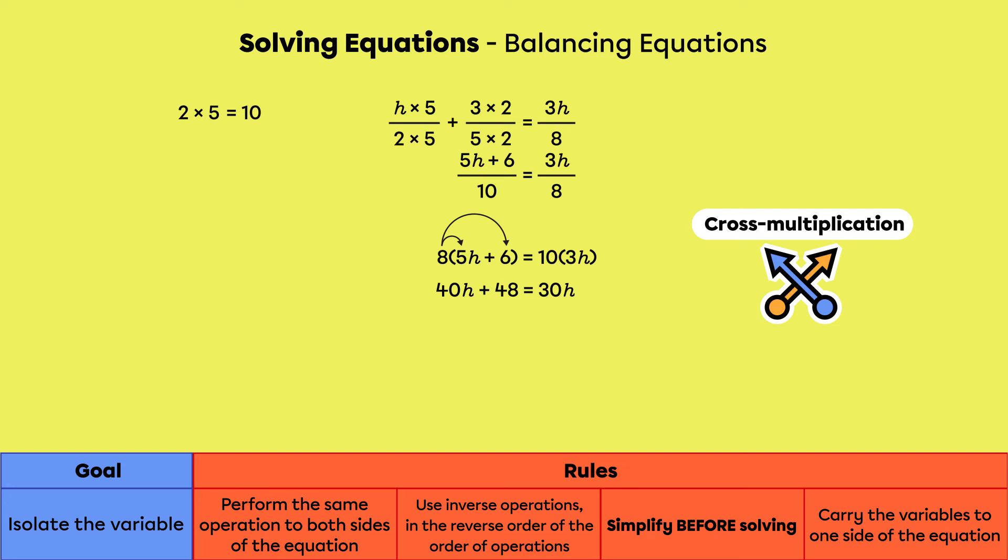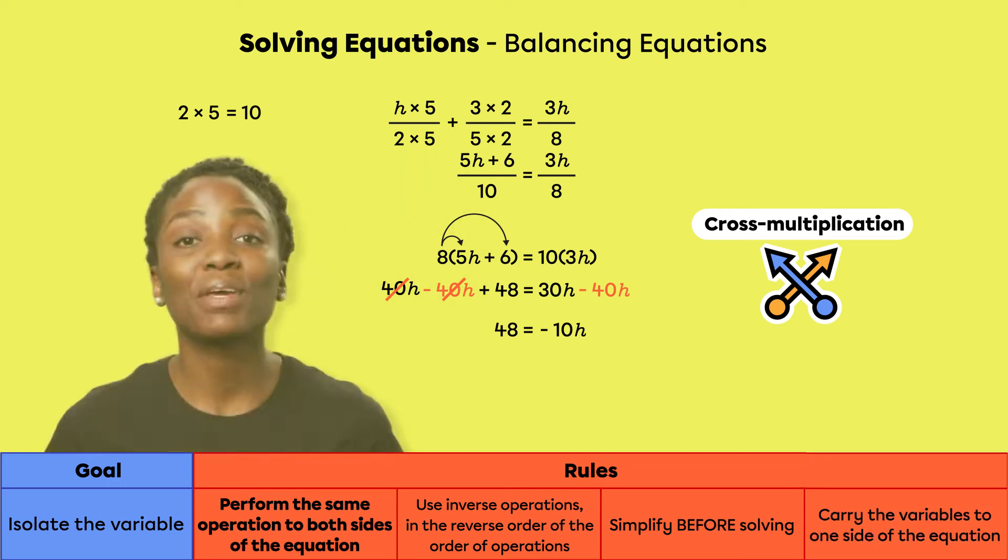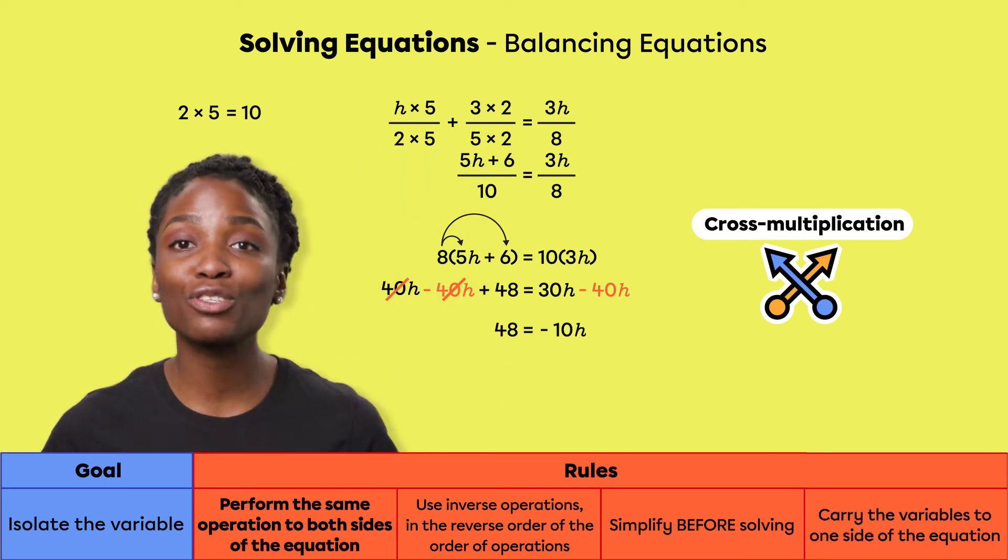From there, all the fractions have been removed, so we can apply the same rules as before. We subtract 40h from both sides of the equation. On the left, the 40h cancels itself out and 48 is remaining. On the right, 30h minus 40h gives negative 10h.